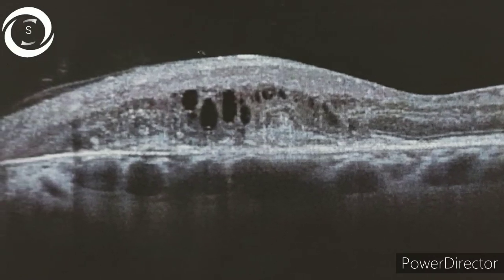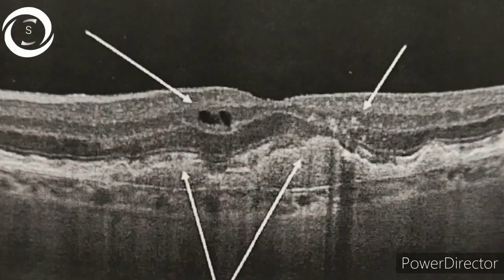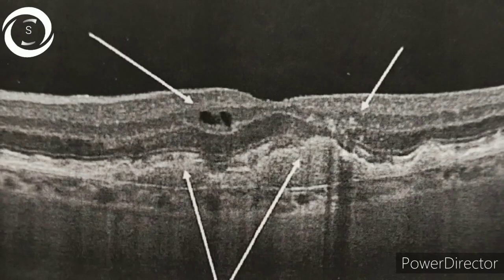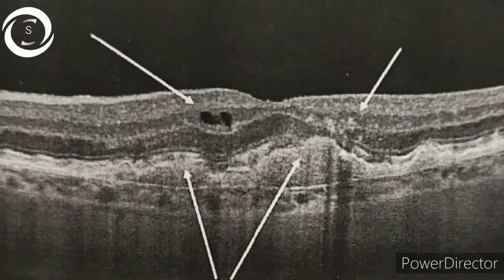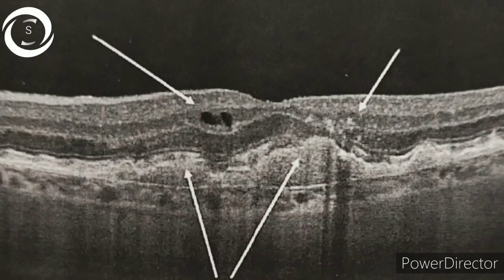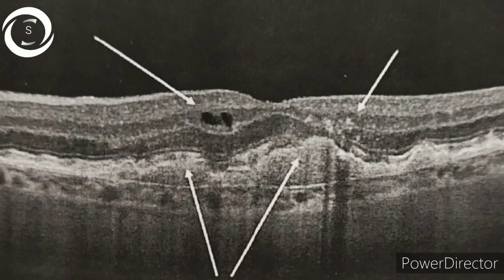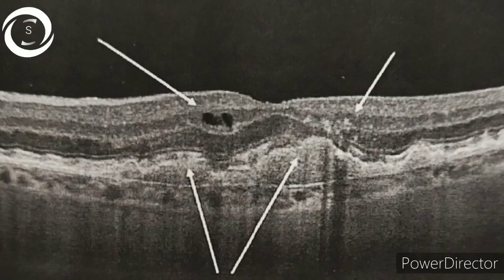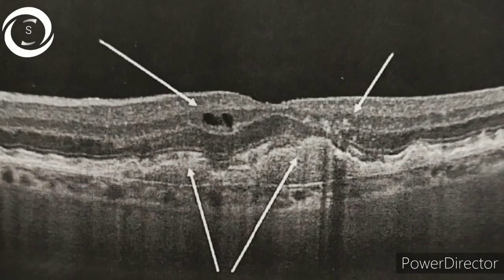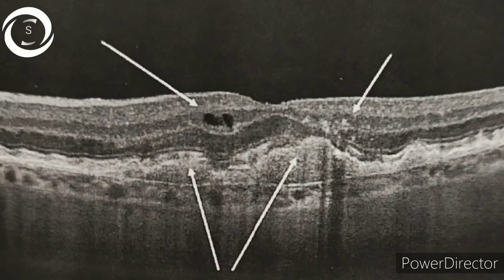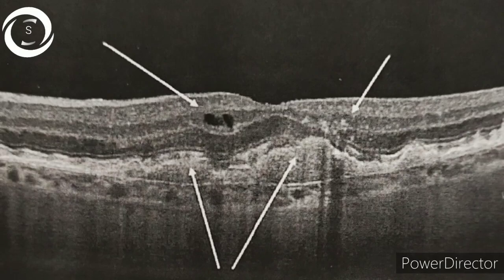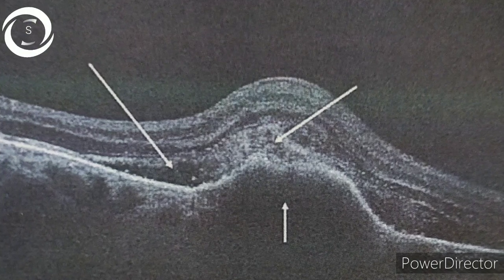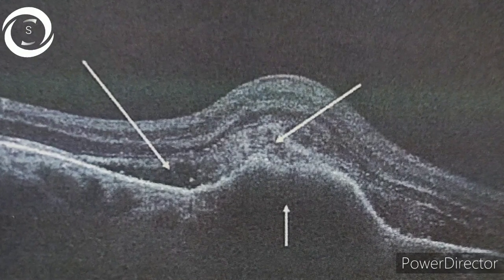In the fourth OCT, you can appreciate the area of hyper-reflectivity in the outer retina overlying pigment epithelium detachment. Intra-retinal cysts are also seen, along with soft drusen. This is the proliferation of abnormal vessels within the retinal tissue, called retinal angiomatosis proliferation, or RAP. This is type 3 CNV, usually associated with exudative AMD.